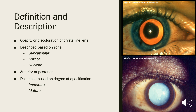Cataracts are defined as any opacity or discoloration of the lens. However, clinically we use the term cataract for opacities that impair vision. Cataracts are typically described according to the zone of the lens that's involved, including the subcapsular, cortical, and nuclear, though opacities can involve more than one zone. Their location can be further specified as either anterior or posterior, and cataracts can also be described according to their stage of development, with immature cataracts signifying that there's clear cortex still present and mature cataracts signifying a totally opacified cortex.